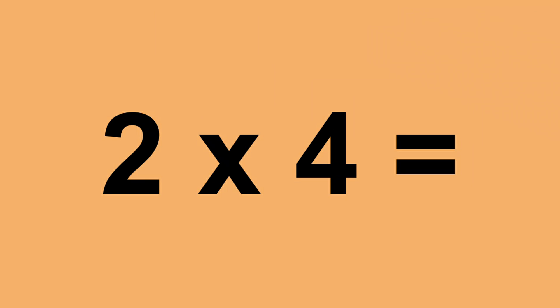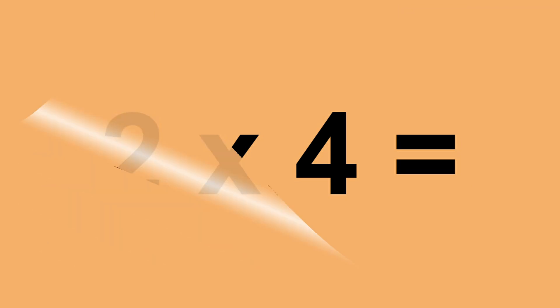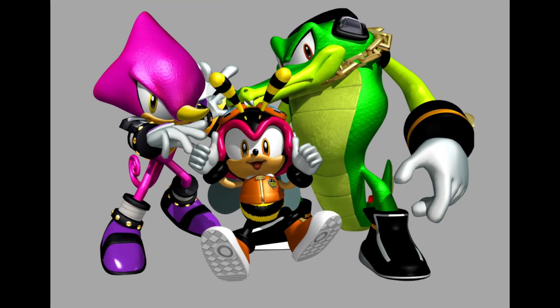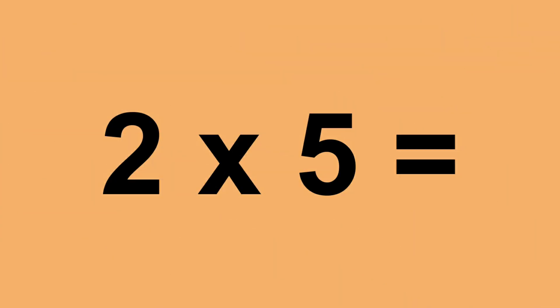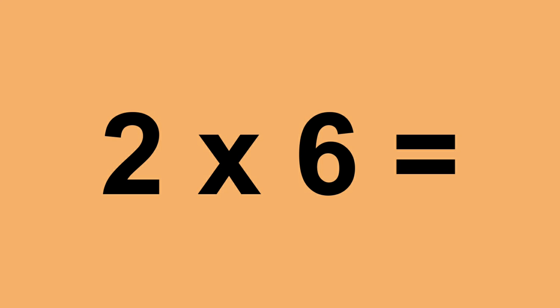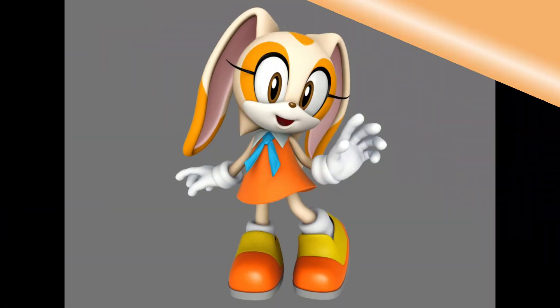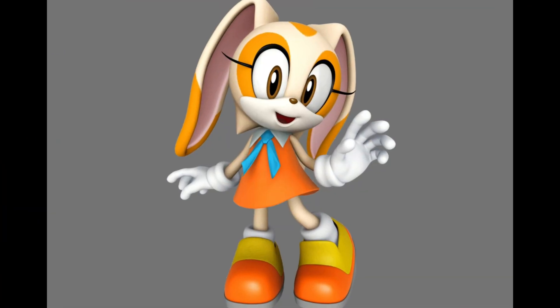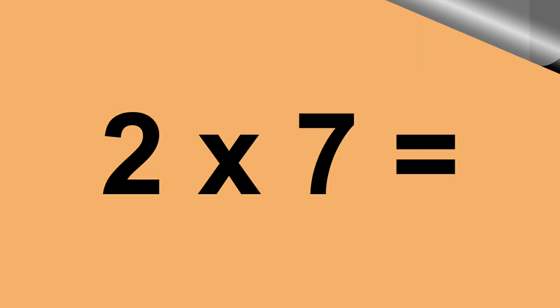Two times four equals eight. Two times five equals ten. Two times six equals twelve. Two times seven equals fourteen.